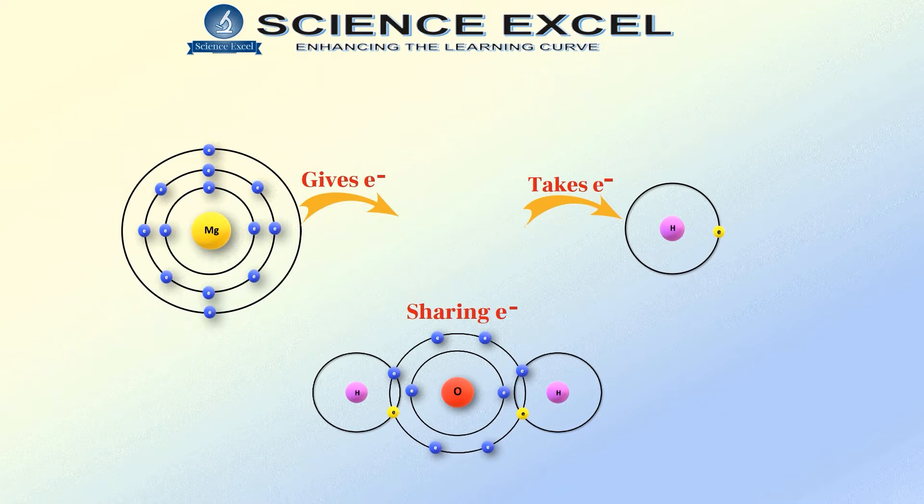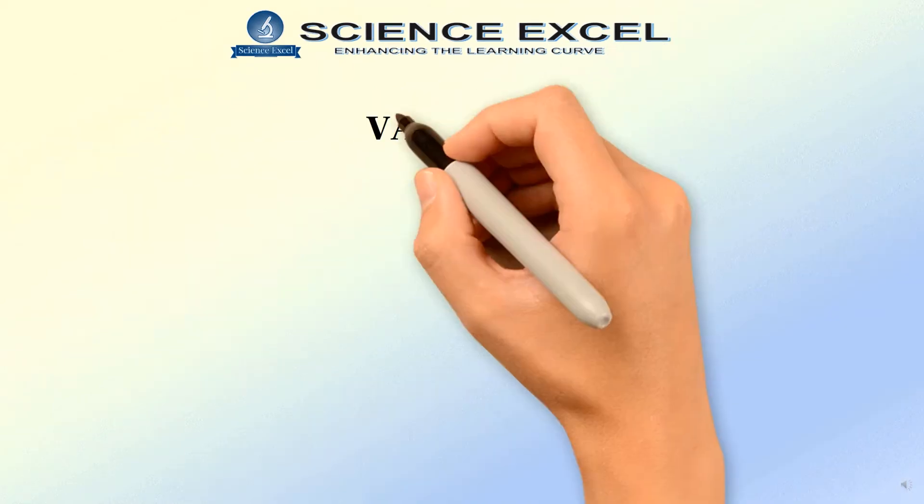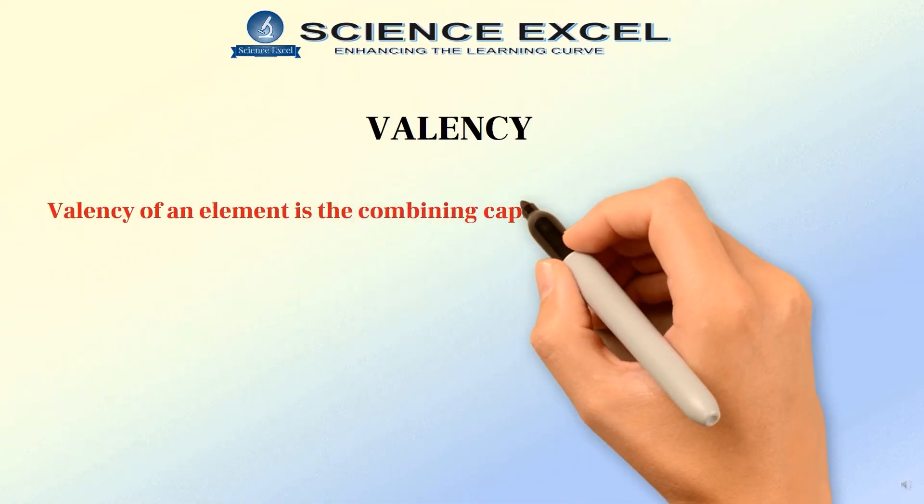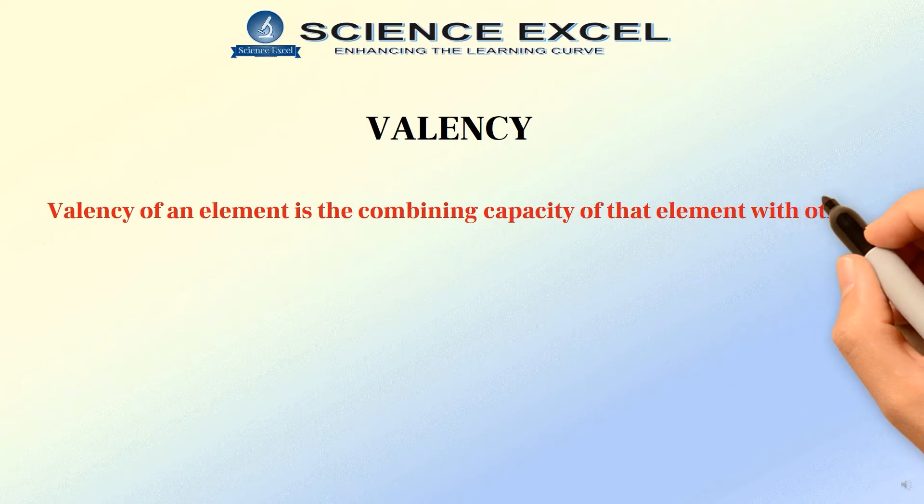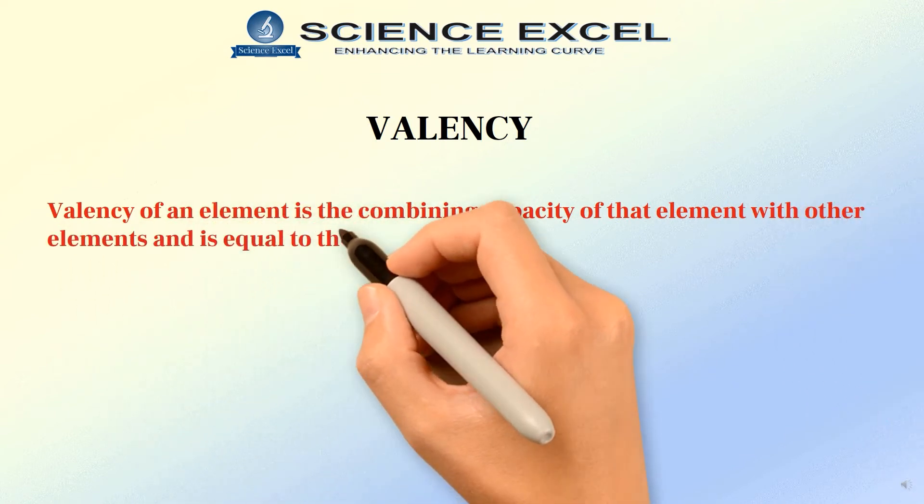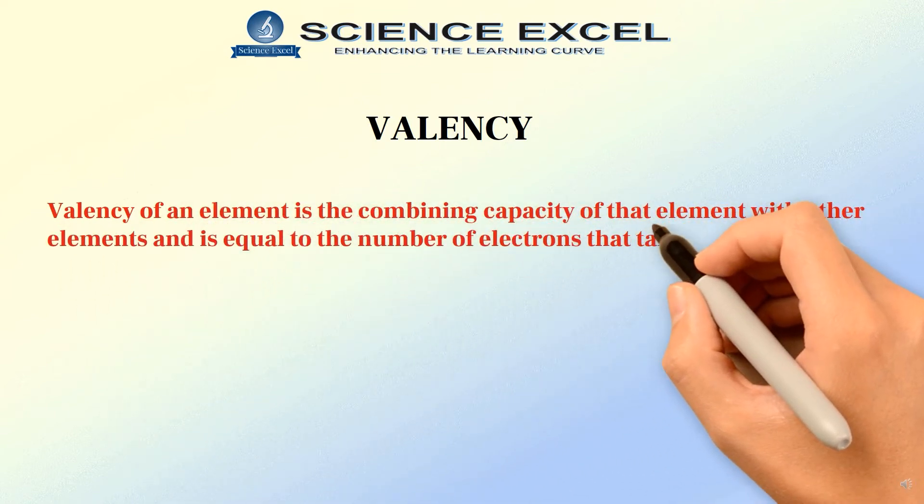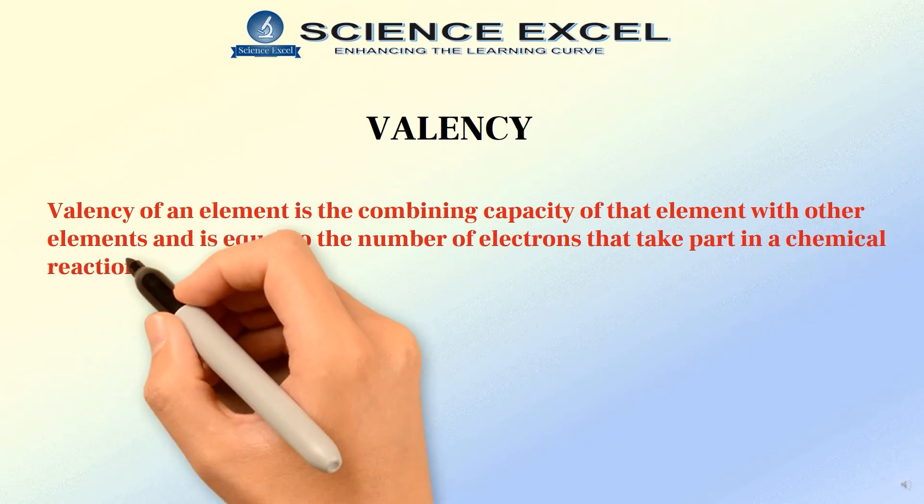Do you know what this concept is called? Yes, it is called valency. Now, let us understand this concept in detail. Valency of an element is the combining capacity of that element with other elements and is equal to the number of electrons that take part in a chemical reaction.